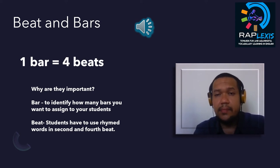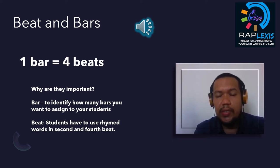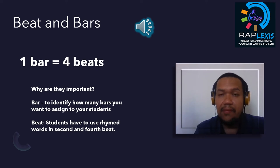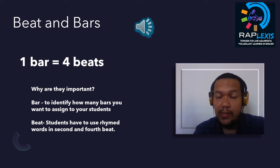Are you ready? So we count: one, two, three, four — bar one. Two, two, three, four — bar two. Three, two, three, four — bar three. Four, two, three, four — bar four. And the end. Usually rap music has 16 bars at least, but here I just showed you a simple way on how to count a beat.